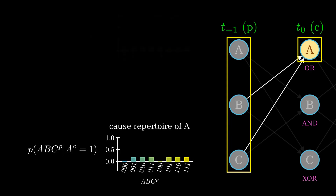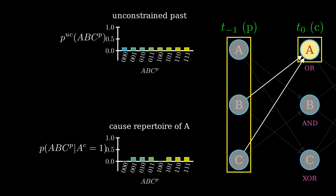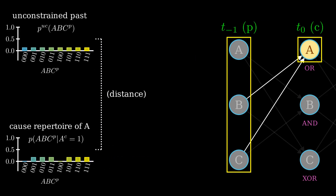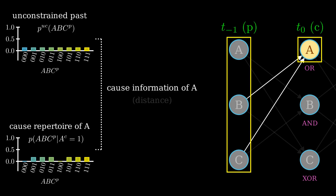From this, we can plot the distribution of probabilities for past states conditional on current A being 1. This is called the cause repertoire of A. Now, we can compare that to the unconstrained distribution of the past state that we found earlier. We can calculate the distance between the two distributions using a measure called the Earth Mover's Distance. The intuitive idea is to imagine that the distributions are piles of dirt, and the distance is the effort required to turn one pile of dirt into the other. In IIT, the distance between the unconstrained past and the cause repertoire of A is called the cause information of A. The distance between the distributions in this particular case — that is, the cause information of A — will be 0.33.